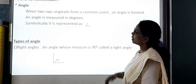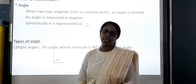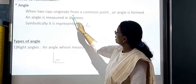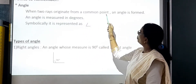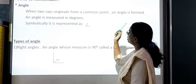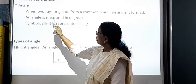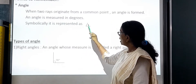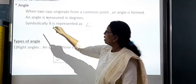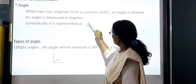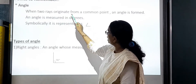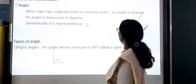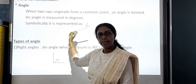And next is the angle. When two rays originate from a common point, an angle is formed. An angle is measured in degrees. Symbolically it is represented as angle. This is 1 ray, this is 2 rays originating from a common point, and an angle is formed.